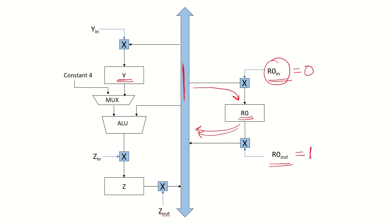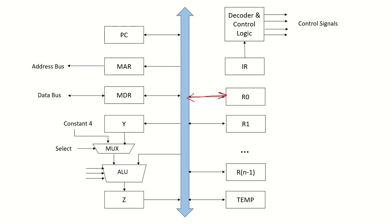For the temporary register Y, it can take data from the bus only when the control signal Y_in is enabled. The ALU can store the result of computation in Z only if Z_in is enabled, and Z can output onto the internal bus only if Z_out is enabled. Similarly, each unit connected to the bus has appropriate control signals that control whether it takes data from the bus or puts data onto the bus.